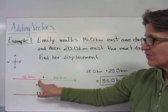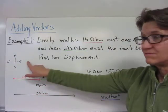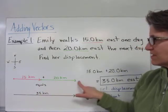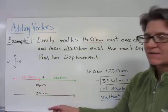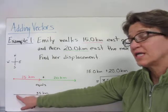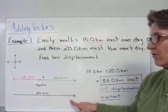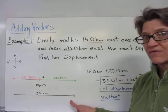So here's Emily's displacement the first day to the east. There's her displacement the second day. And you just add them together. And if we were drawing it graphically, we would have an arrow to represent 35 kilometers.